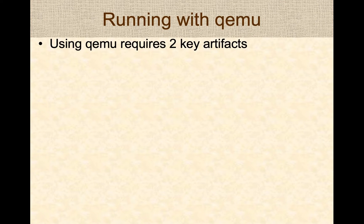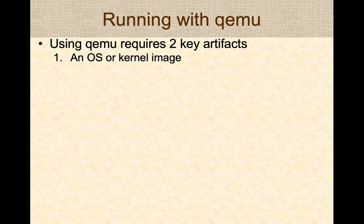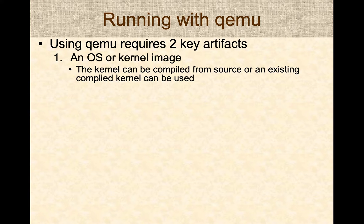When running with QEMU, you need two key artifacts. One is, of course, the operating system or kernel image — the kernel that's going to boot and start running. The kernel can be compiled from existing source code, and there are many videos on the internet showing how to compile a Linux kernel. Here we'll just use an existing compiled kernel to save time.